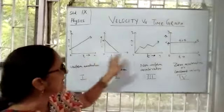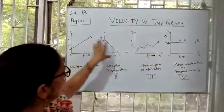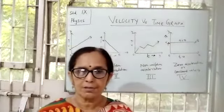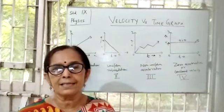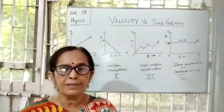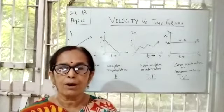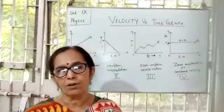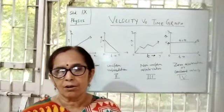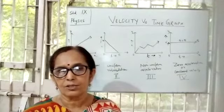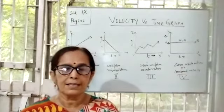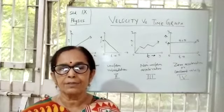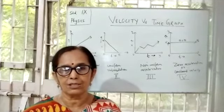With the help of the graph, by looking at the nature of these graph lines, you are now able to determine whether an object has acceleration or not, and if it does, what kind of acceleration it has — whether uniform acceleration, non-uniform acceleration, or no acceleration at all. As I mentioned at the very beginning, the velocity-time graph helps us know whether a moving object has acceleration or not.